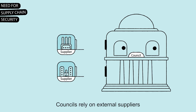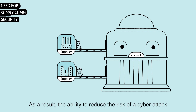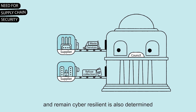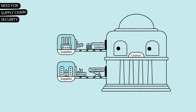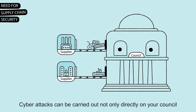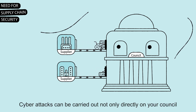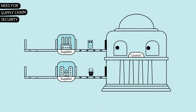Councils rely on external suppliers to deliver devices, products and services. As a result, the ability to reduce the risk of a cyber attack and remain cyber resilient is also determined by the cyber security of organisations within a council's supply chain. Cyber attacks can be carried out not only directly on your council but also indirectly via your council supply chain.